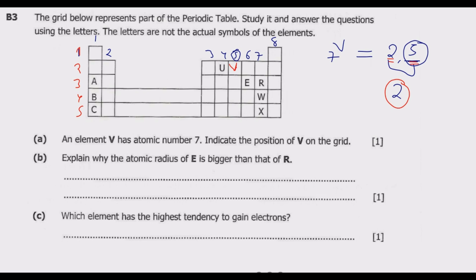Question B: Explain why the atomic radius of E is bigger than that of R. So why is E going to have a bigger radius than R? You notice that E is to the left of R. So now what determines the atomic radius of a given element is the number of protons. So if you look at E, because E is on the left of R, it will have fewer protons. Thus R will have a greater effective nuclear charge which will draw its valence electrons closer to the nucleus.